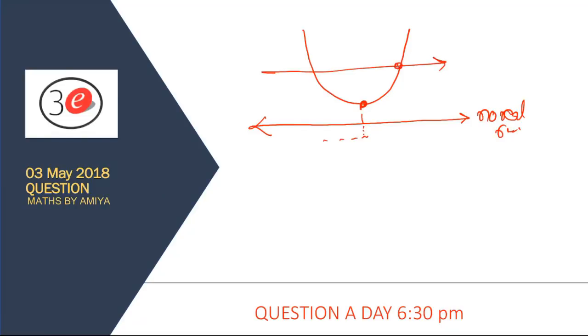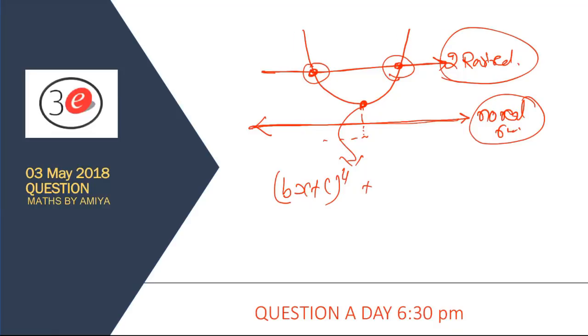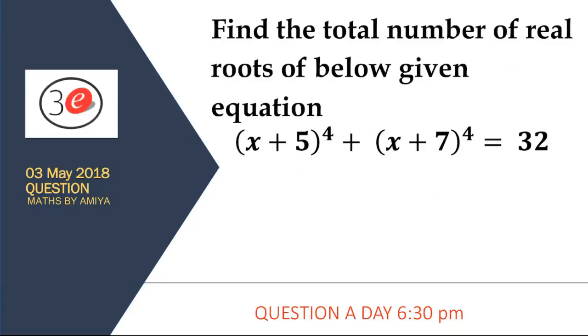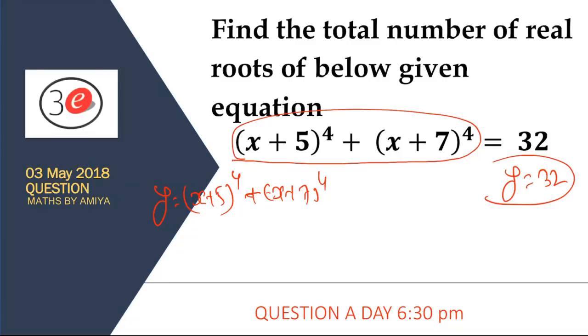How do we check the minima? If you have two functions, the minima would be at x equals average of roots. We have two equations: y = (x+5)^4 + (x+7)^4 and y = 32. The first graph looks like a U and the second graph is a horizontal line.